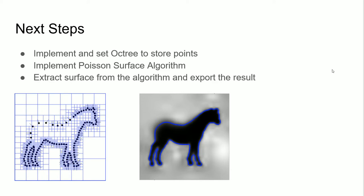For our next steps, we need to implement the octree to efficiently store the points in 3D space, then implement the Poisson surface algorithm, and then extract the surface using marching cubes to export the results in MeshEdit.